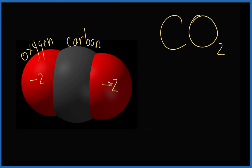So we have two oxygens, and each one is minus two. That gives us negative four for the charge on the oxygens.